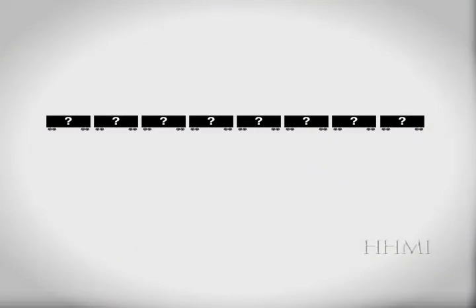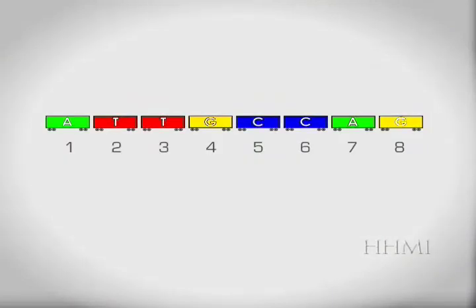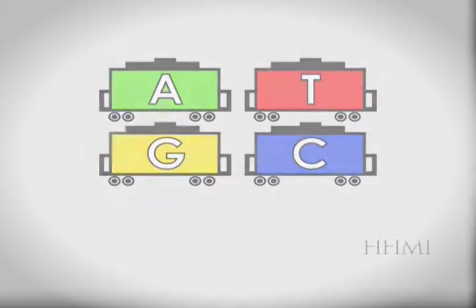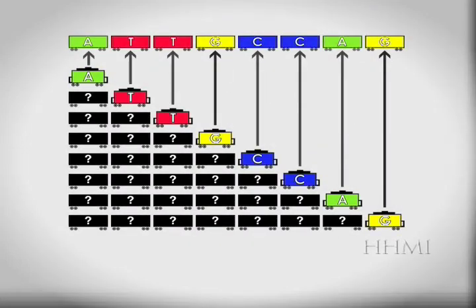When we sequence DNA we want to determine the identity of each nucleotide and the order. We can tell the identity of each nucleotide in the sequence by using a fluorescent terminating nucleotide.